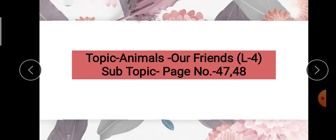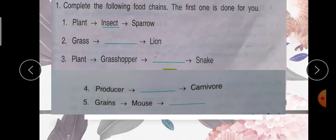Hanji beta, aaz hum page number 47 and 48 karenge lesson 4 ke. Ok, so let's start. Open your book, page number 47.